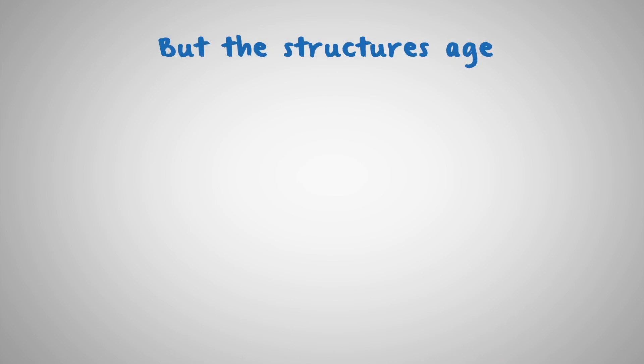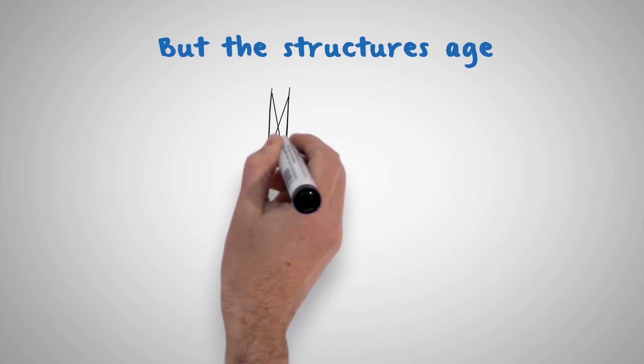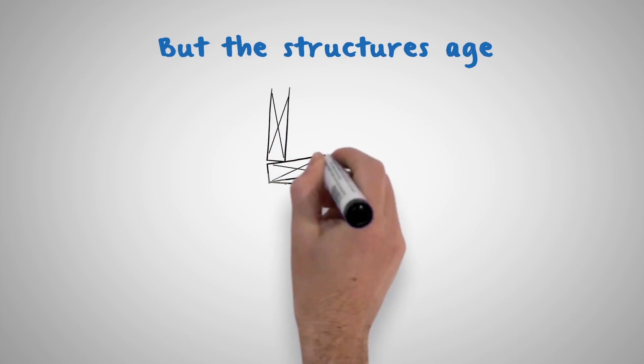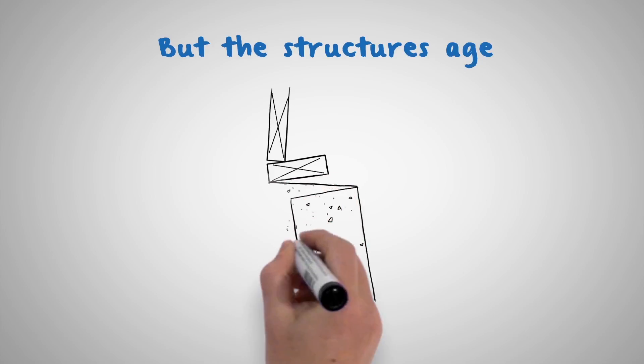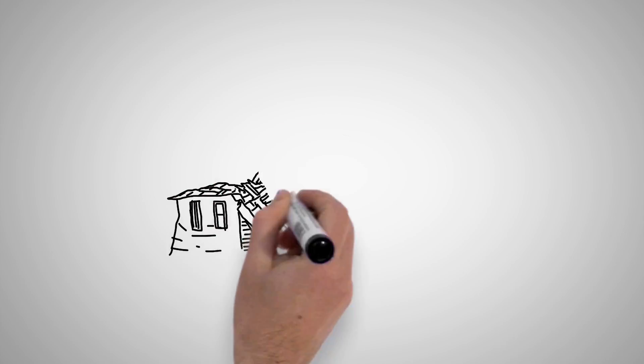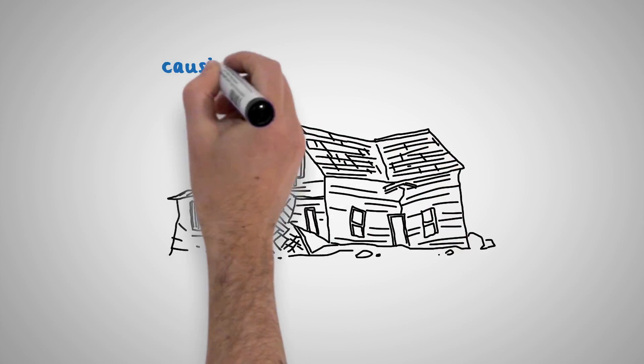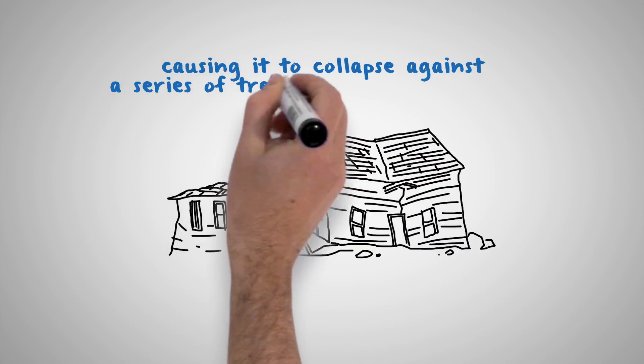But the structure's age and the original engineering, combined with many years of geological, seismic, and meteorological factors, might actually weaken a lot of the support below the floor at its foundation, eventually weakening the structure and causing it to collapse against a series of tremors or an earthquake.